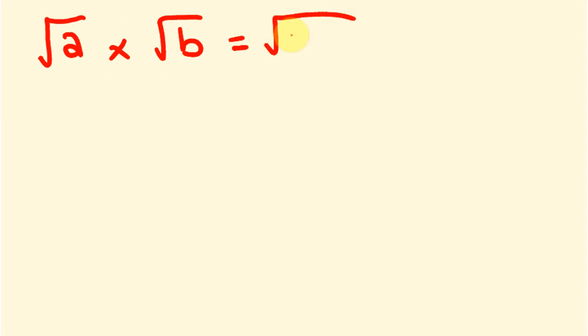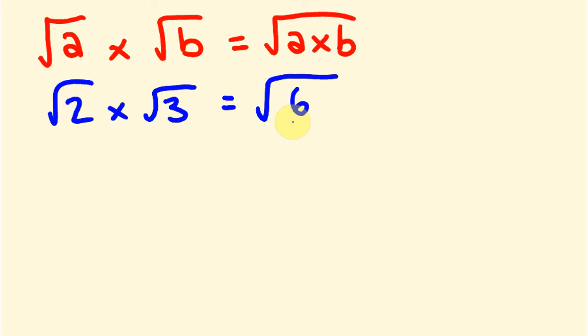So back to our initial question which was the square root of 2 times the square root of 3. The answer to this is the square root of 2 times 3 which is 6.